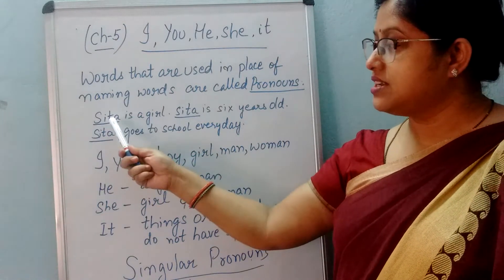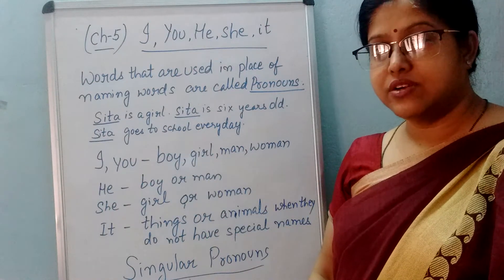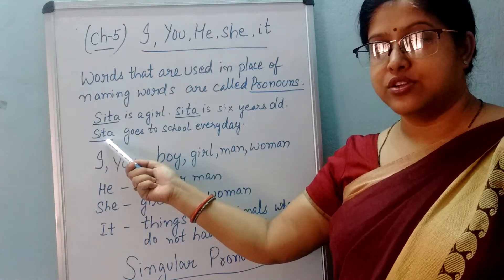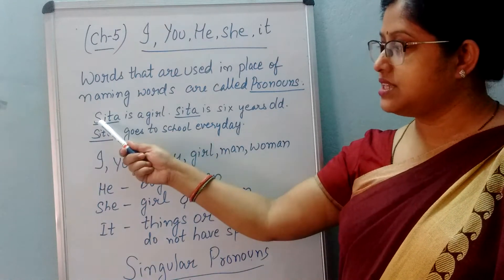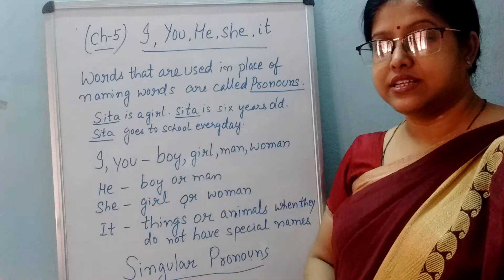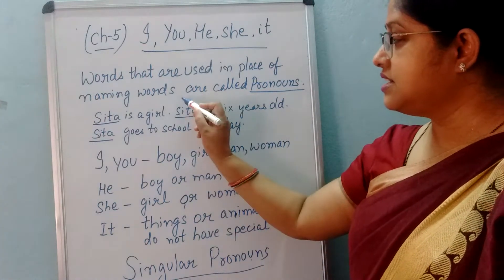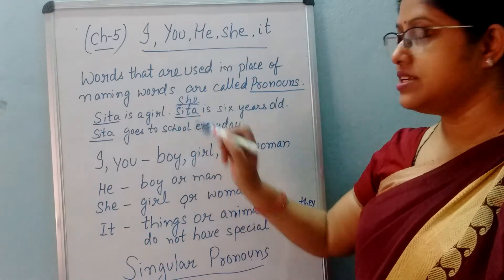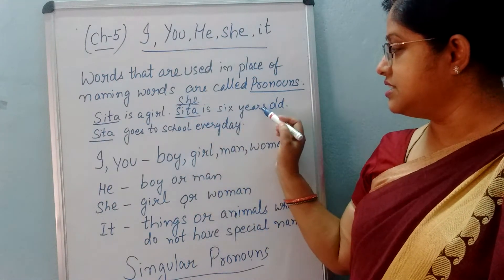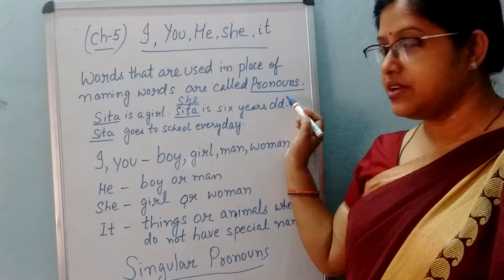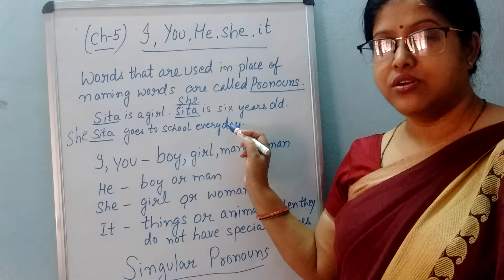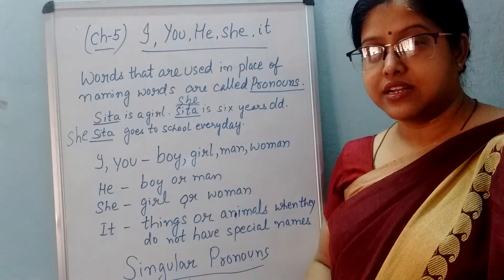So there is repetition of Sita — baar baar repeat ho raha hai. Yaha bhi Sita, yaha bhi Sita, yaha bhi Sita — here also Sita is repeating, so this is looking odd. So instead, after 'Sita is a girl,' we will use 'she' for Sita. She is a girl. She is 6 years old. She goes to school everyday. Woh school daily jati hai. Ab ye sentence theek lag raha hai — it is looking proper.